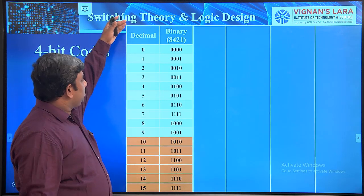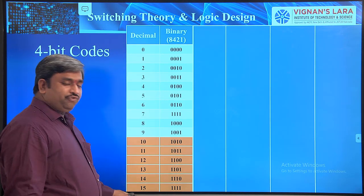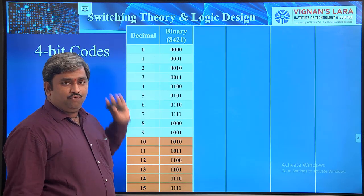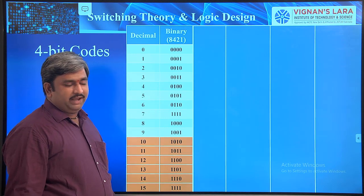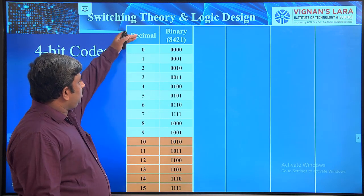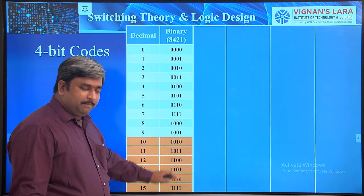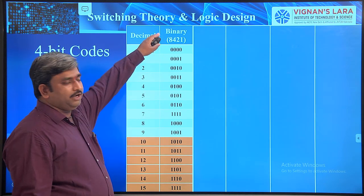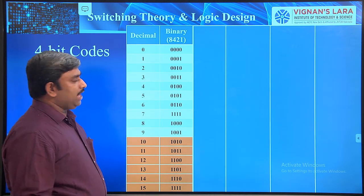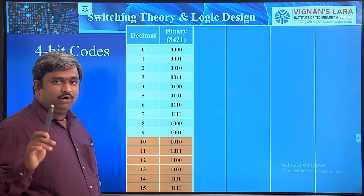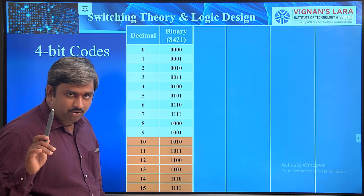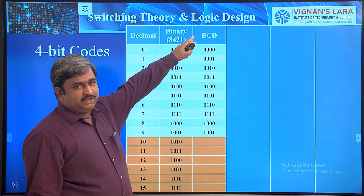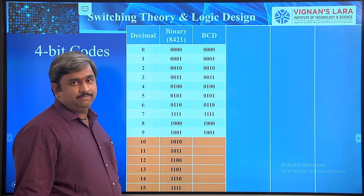In summary, the 4-bit codes we have studied are: BCD code, XS3 code, 8, 4, -2, -1 code, and 2, 4, 2, 1 code. With 4 binary digits we can represent values from 0 to 15 in normal binary (8421 code).